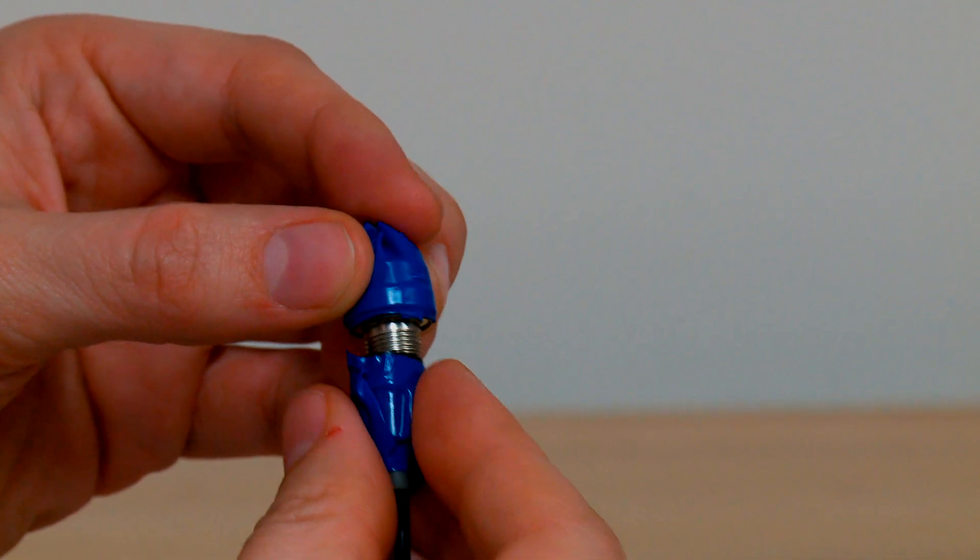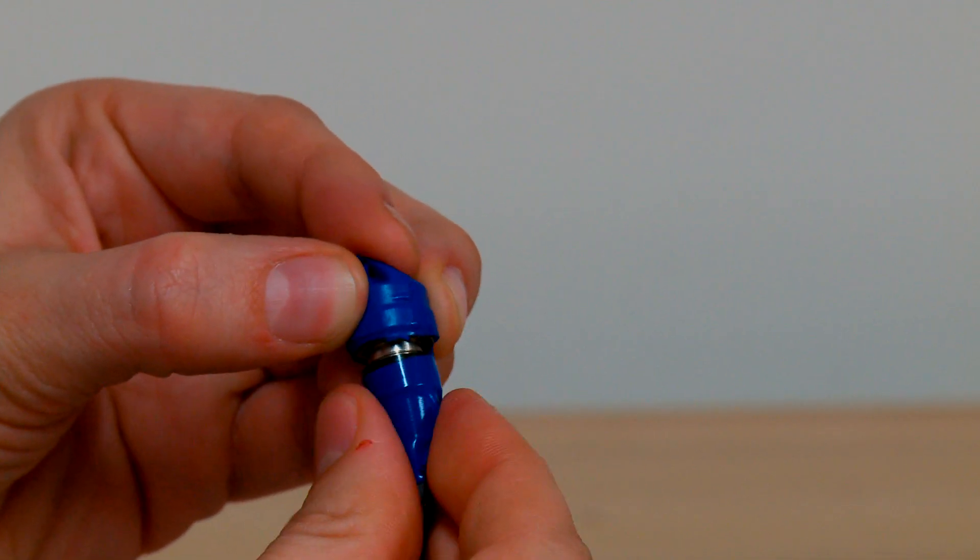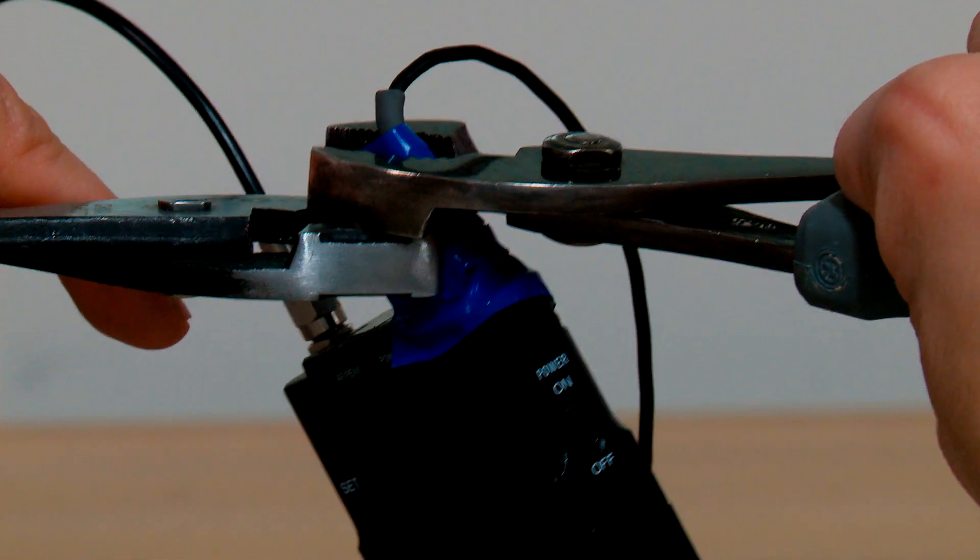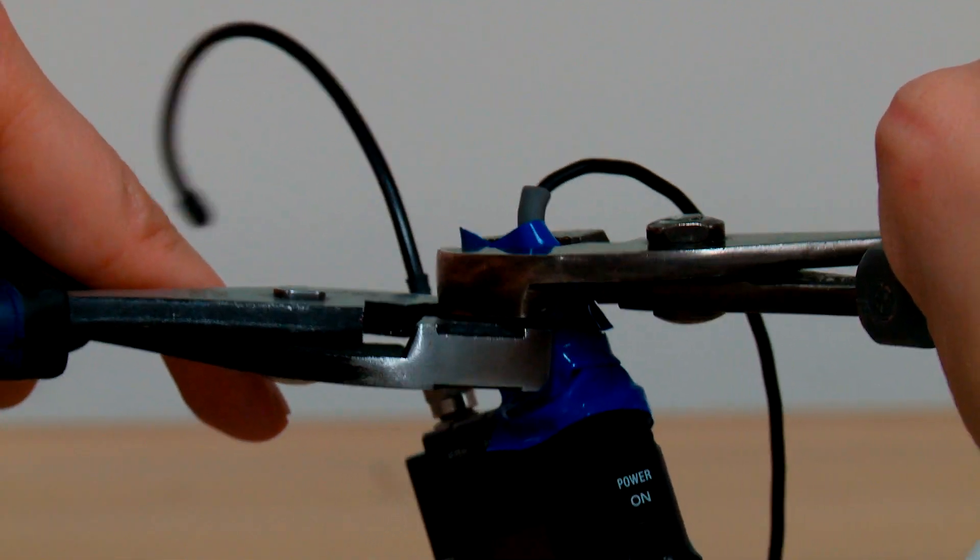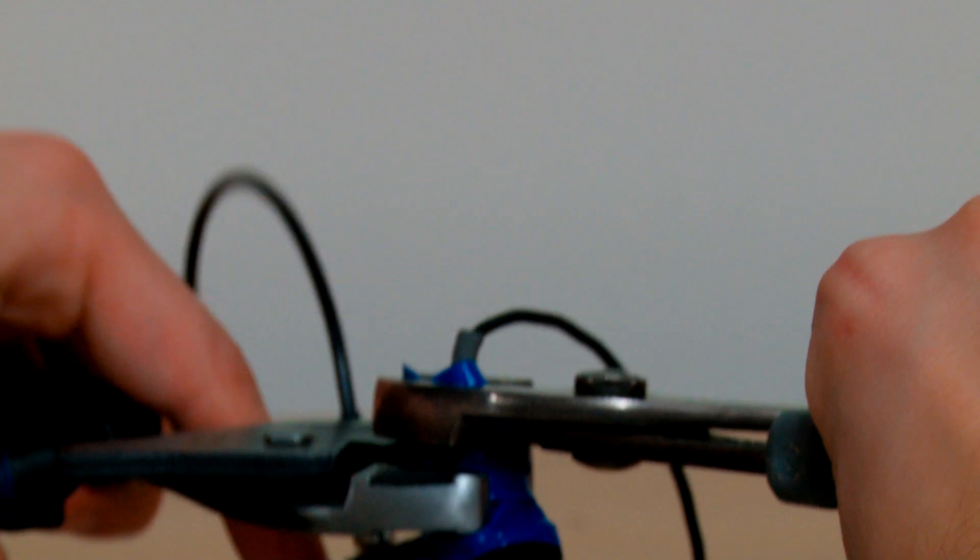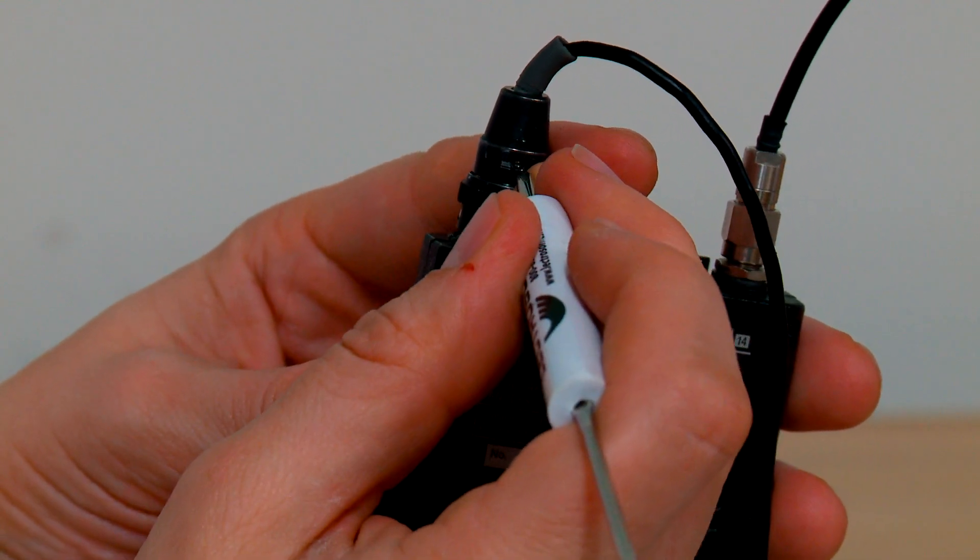Time to reassemble the 4-pin connector. Hand-tighten first. And then make it snug with the slip-joint pliers. Then screw the tiny screw back in.